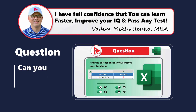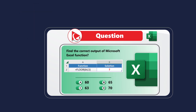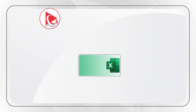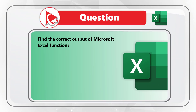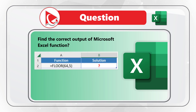Here's an amazing question we see on the test more and more often. You need to find the correct output of a Microsoft Excel function. You're presented with the statement: equal sign FLOOR, and then in parentheses 64 comma 5.